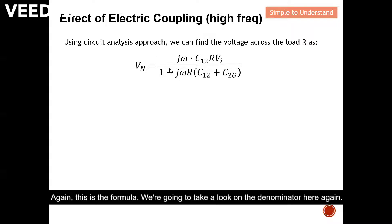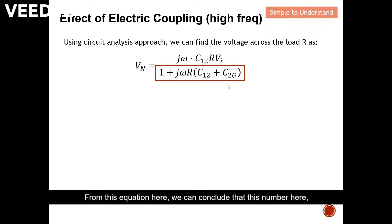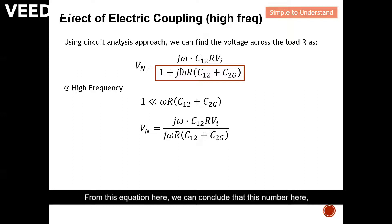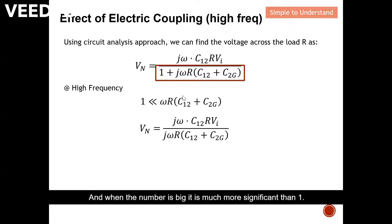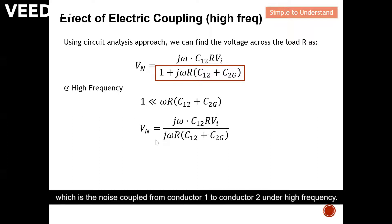Next, we are going to understand the high frequency case for electric coupling. From this equation, we can conclude that the omega-dependent term will be much much larger compared to 1, because omega equals 2πf, and at high frequency this number becomes very large. When a number is much more significant than 1, we can omit the 1 away.